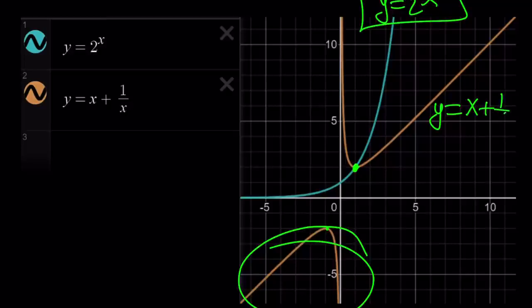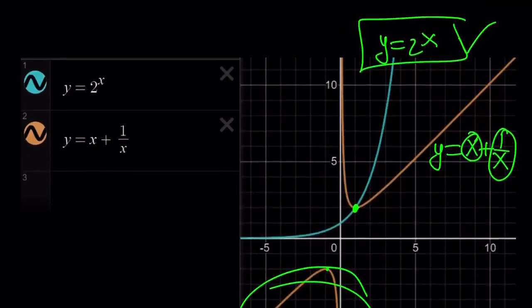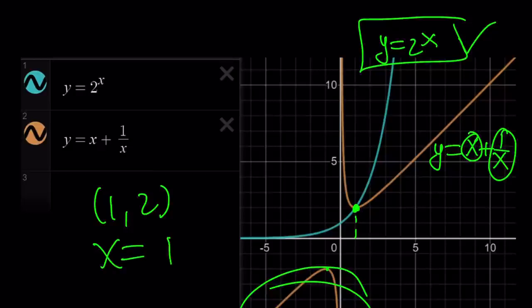2^x is going to grow much faster than this function. So, this function, as x approaches infinity, this is going to be super small. This is going to look like y = x, which is a linear function. So, obviously, exponential is going to grow much, much faster than the linear looking function. And we're going to have a single intersection point, which is going to be at (1, 2). But since we were trying to solve for x, x = 1 is the only solution.